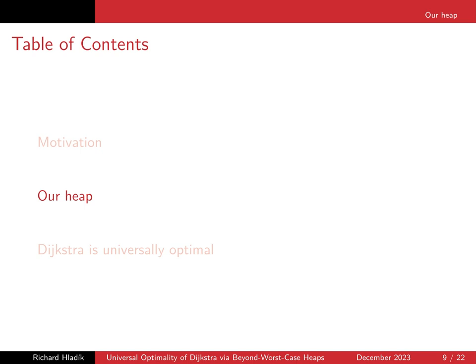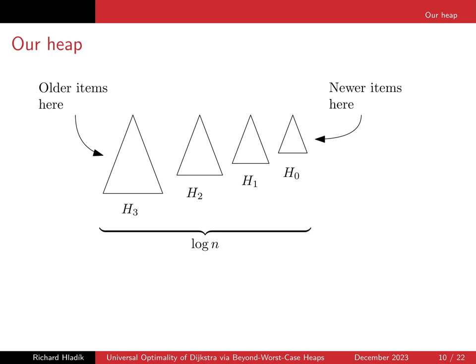Let me sketch the description of our heap. Our heap consists of roughly log n heaps of exponentially growing sizes. To implement those heaps, we just use Fibonacci heaps as a black box. We put new elements into the small heaps, and then gradually, as elements get older and older, they gradually move and grow into larger heaps.